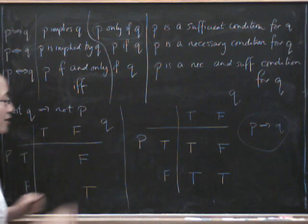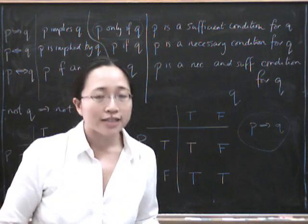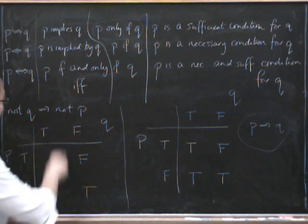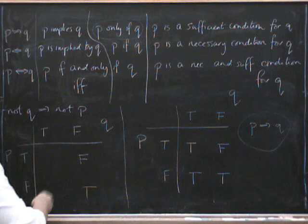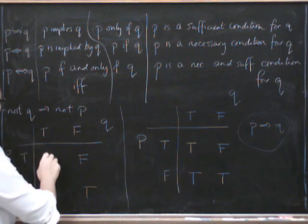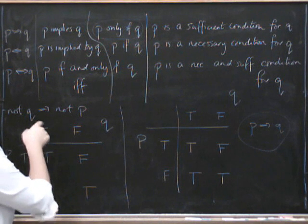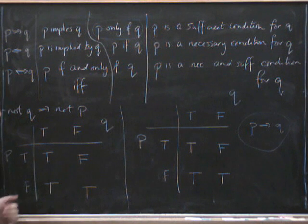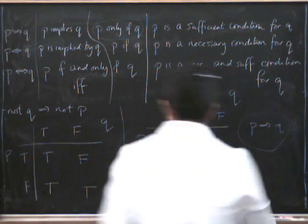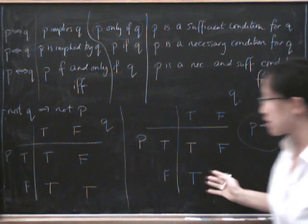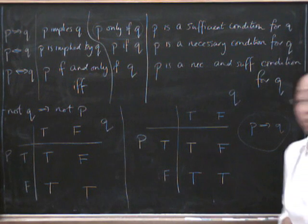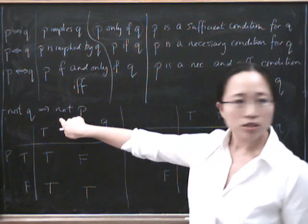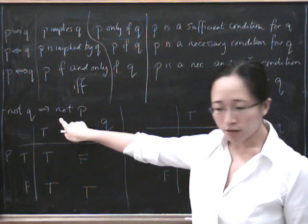Now all this is telling us is about what is the case when Q is false. So over here, where Q is true, anything is possible. So if Q is true, P could be true. And if Q is true, P could also be false. It doesn't matter. So now if you look at these two truth tables, they've turned out to be the same. So this is another way of seeing that P implies Q is the same as not Q implies not P.